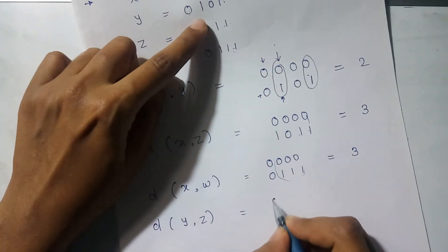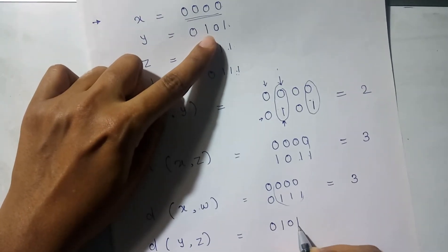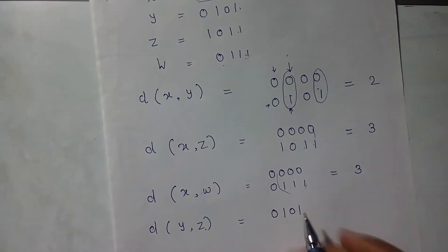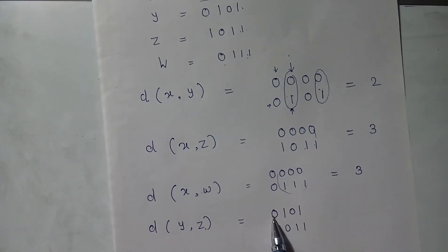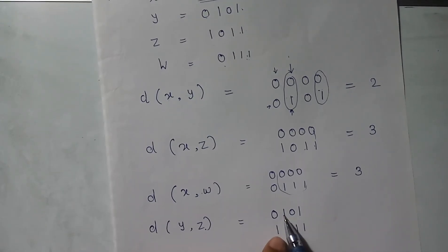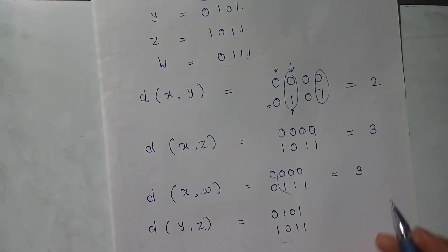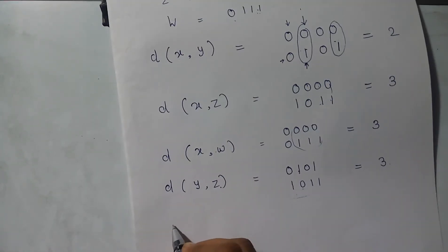For y and z: the sent codeword is 0101 and received is 1011. We sent 0 but received 1 in the first position. We sent 1 but received 0 in the third position. Three bits are different, so the Hamming distance between y and z is 3.